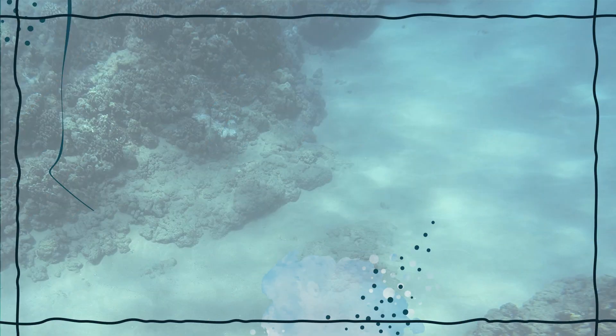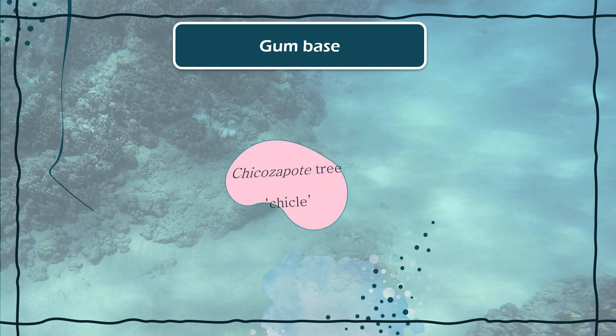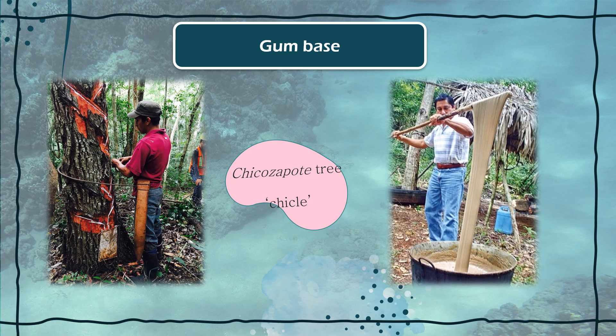Gum base. Traditional extraction of chicle comes from the Chico Zapote tree (Manilkara zapota) in Quintana Roo, Mexico. This way of extracting by making zigzag incisions has been known since ancient Mayan civilization, who called it Cicte.